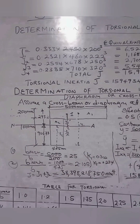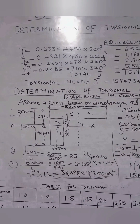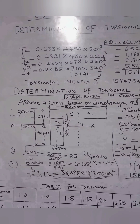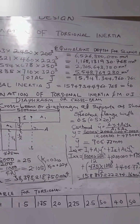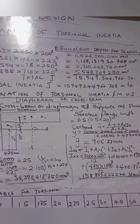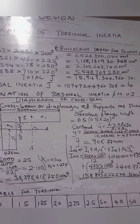The torsional inertia of that particular section has been calculated. The torsional inertia contributions from portions 1, 2, 3, and 4 have been calculated. The total torsional inertia is 15,949,344,960.768.